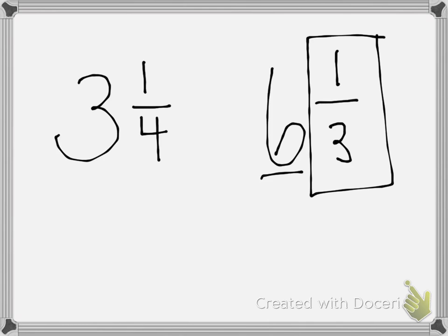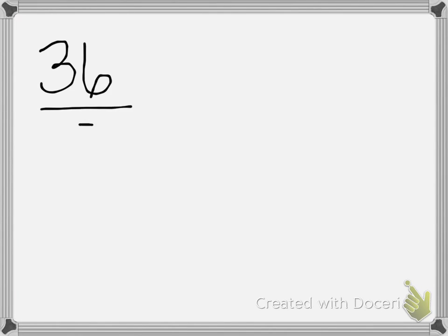Today we're going to convert fractions greater than 1 into mixed numbers. Here is an example: thirty-six fifths. This is a fraction greater than 1 and we want to change it into a mixed number. We are going to use division to solve this — we are going to say 36 divided by 5.